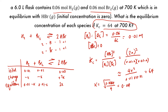We approximated by assuming x is small compared to the initial concentration, so we need to check this. We have x equal to 0.04, so we put that over the initial concentration of 0.01 and multiply by 100, giving 400%. This means the assumption is wrong and that x is significant, so we must explicitly solve the quadratic equation.